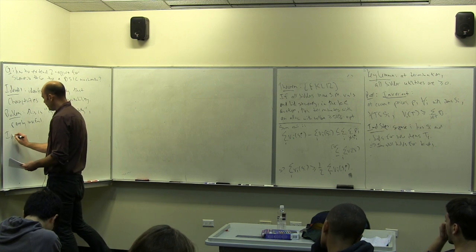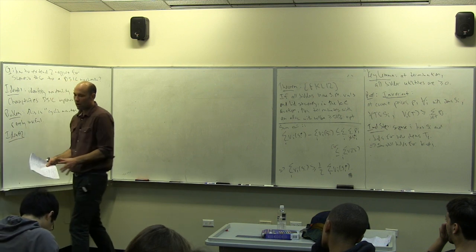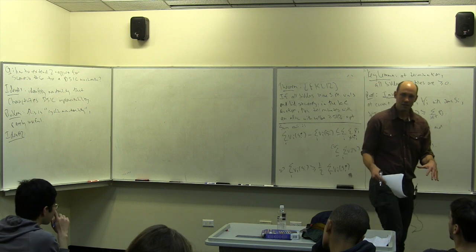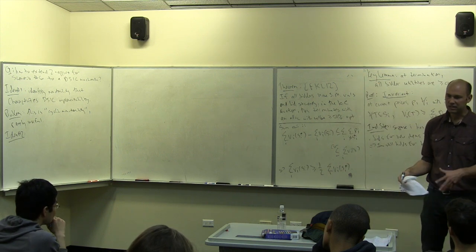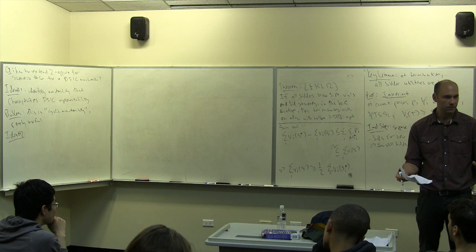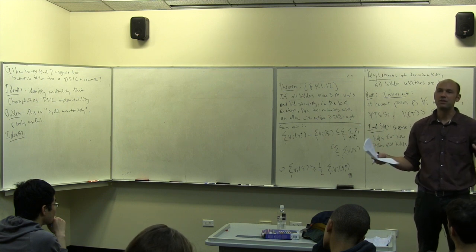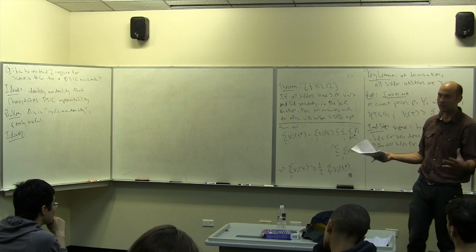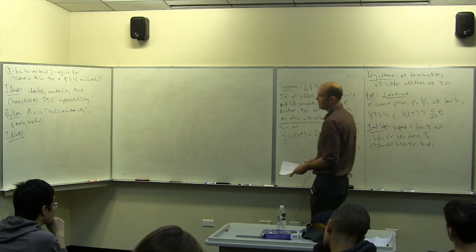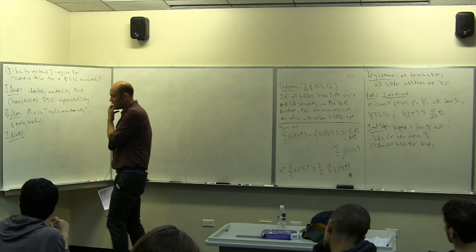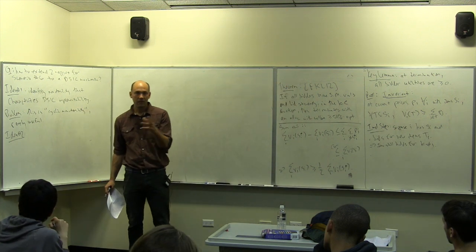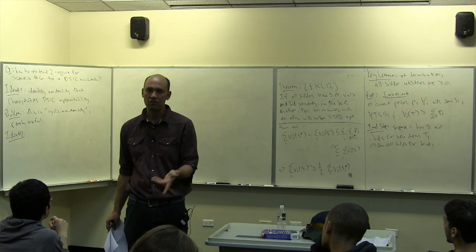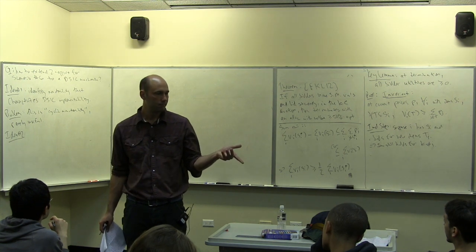So we're going to think about it differently. Idea number two: start from what we already know works and try to make it slightly more powerful one step at a time — add bells and whistles, start bottom-up. The VCG mechanism, for example, we know works — it's DSIC. It may not be polynomial time in the cases we're now looking at, but at least it gets the incentives right.